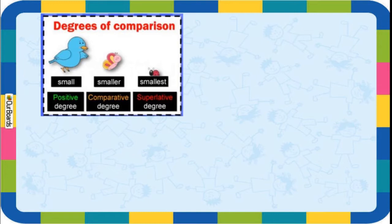See here - three birds are shown. The blue bird is a small bird - that is a positive degree, because we are only describing that one bird. When we see the yellow bird, we say it is smaller than the blue bird, meaning we are doing a comparison between two birds - so that is a comparative degree. The red bird is the smallest among the three birds - so this is a superlative degree.